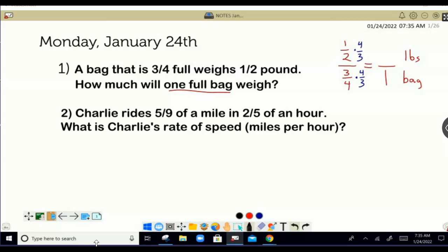One-half times four-thirds. I get four-sixths, or two-thirds. So it is two-thirds, two-thirds of a pound, got to get those right, per bag. One full bag. So three-fourths of a bag is half a pound, and then one full bag would be two-thirds of a pound.